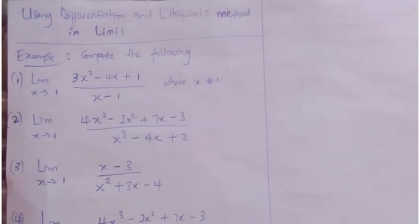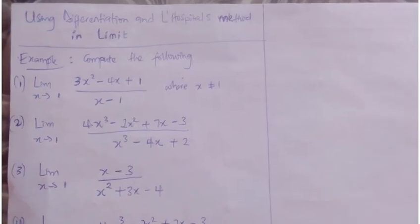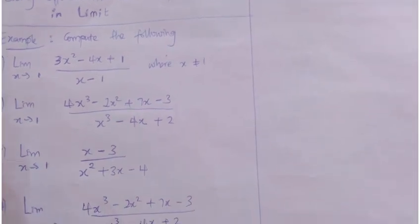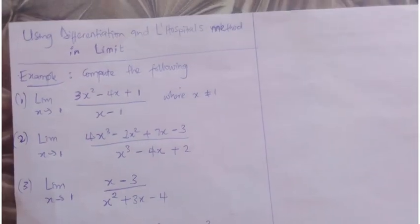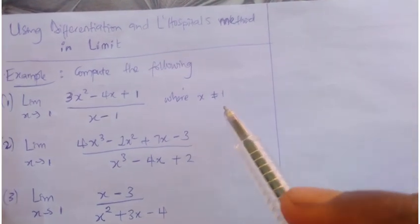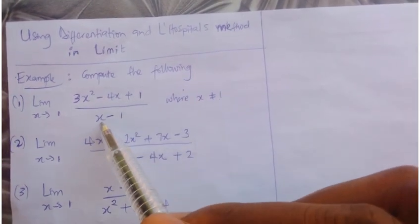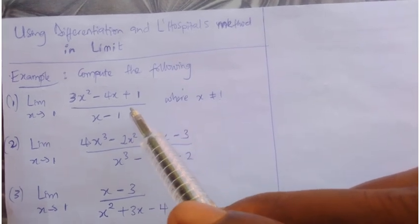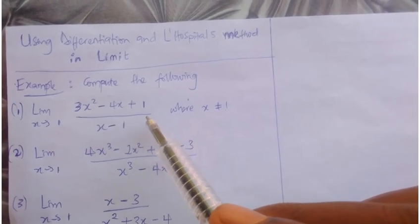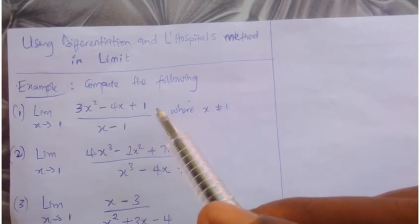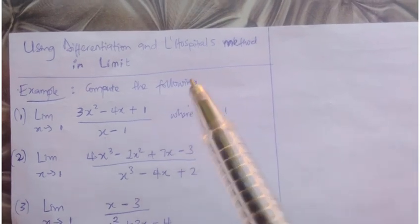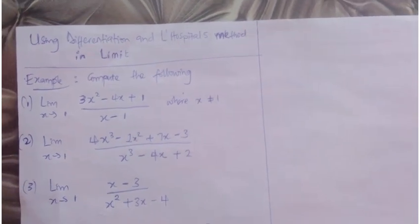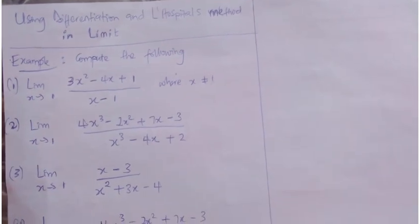For example, when we have the limit as x tends to 1 of (3x² - 4x + 1) over (x - 1), where x is not equal to 1. If I put x as 1 here, it becomes 0 over 0. This means I cannot apply the direct substitution method. That is why I want to use differentiation and L'Hôpital's rule. There are some I might be able to factorize, but let's say I'm going to use differentiation and L'Hôpital's rule.